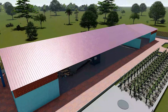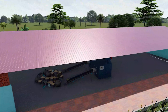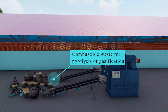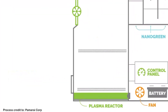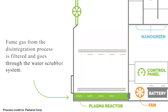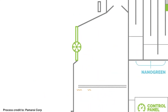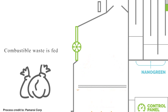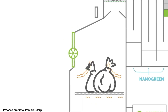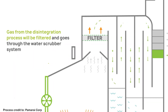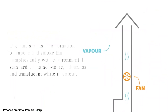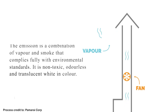For combustible waste, a state-of-the-art plasma gasification unit is employed. Utilizing a controlled gasification process, this unit converts combustible waste into gaseous constituents and an environmentally compliant incombustible residue. The generated gases undergo a series of cleaning processes, including cooling, scrubbing, and cyclone separation, to produce clean gas that meets atmospheric release standards.